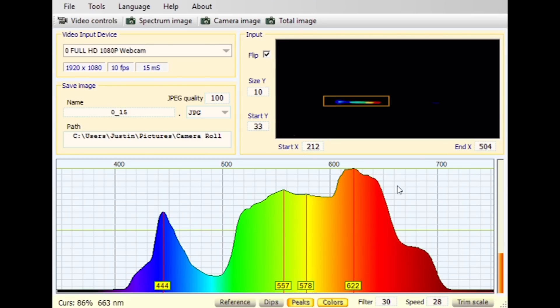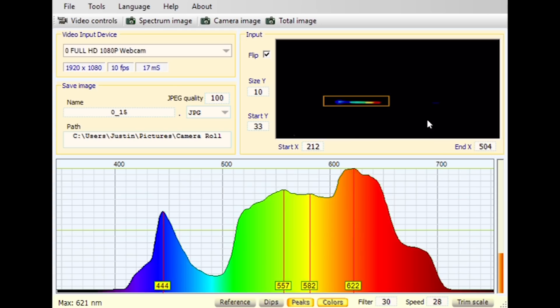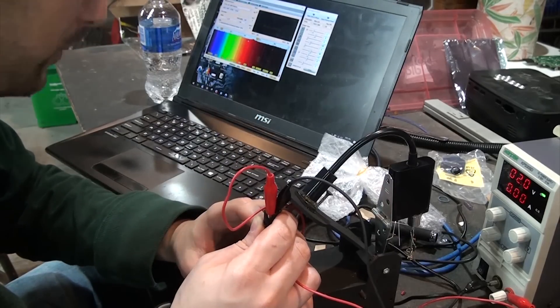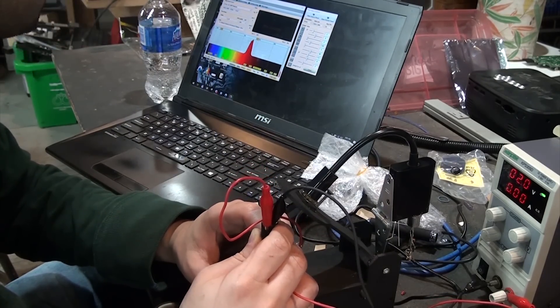To actually use this, we're going to need some software. Here I'm using a program called Thermino, which is pretty basic, but works fairly well. There are other pieces of software, like spectraGryph, but I couldn't get that one working, so I stuck with Thermino for now. To calibrate the software, I used three different lasers of known wavelength and adjusted everything until they lined up with the correct parts of the spectrum.